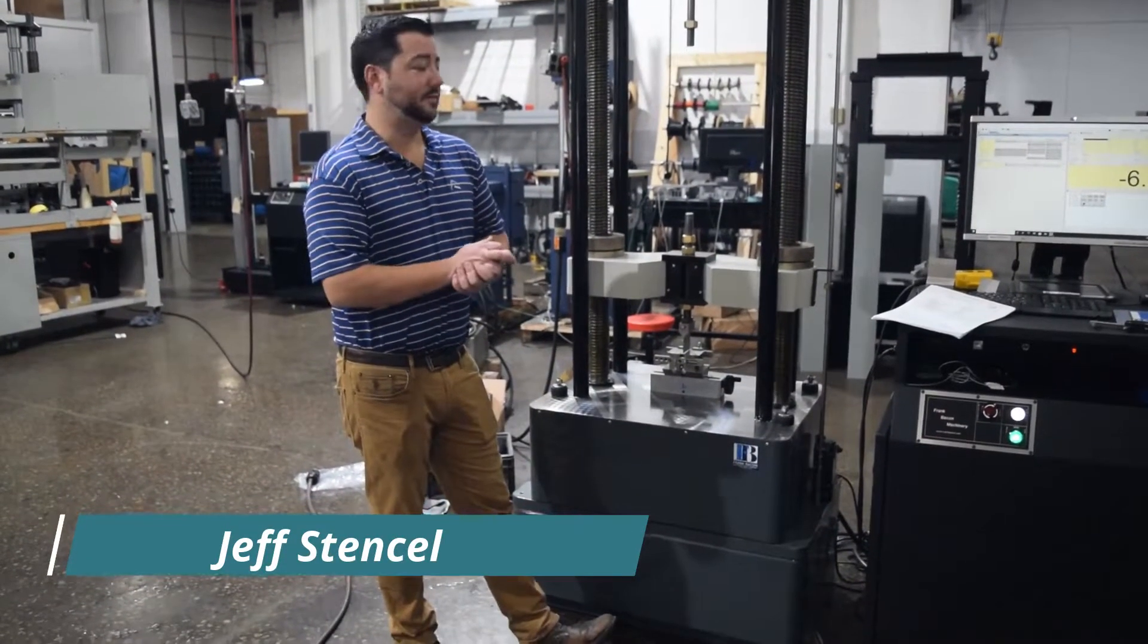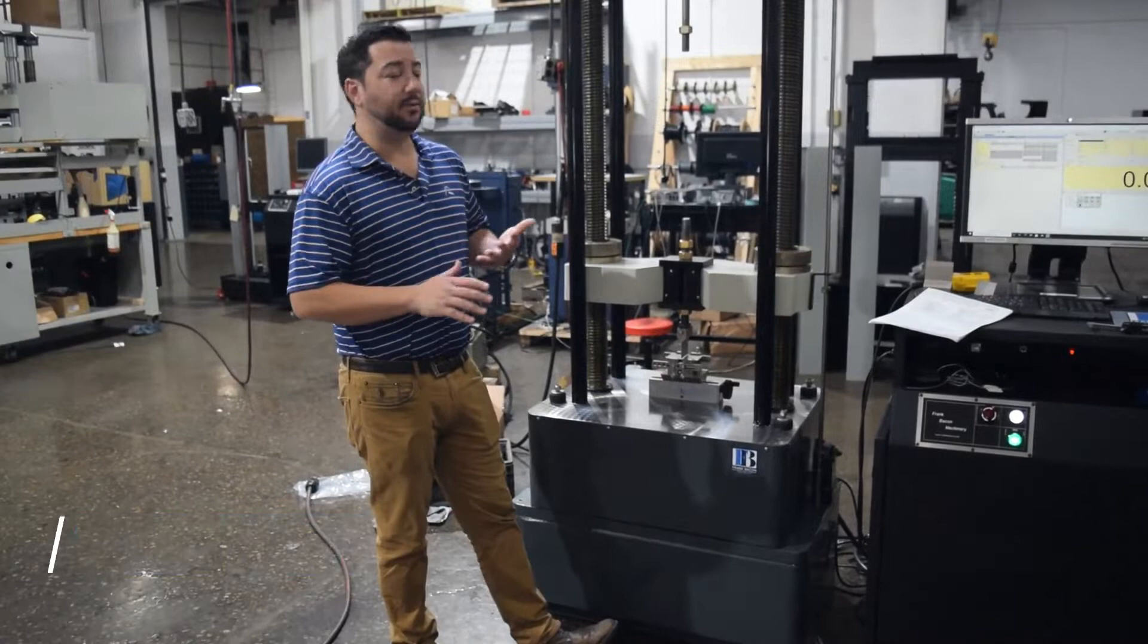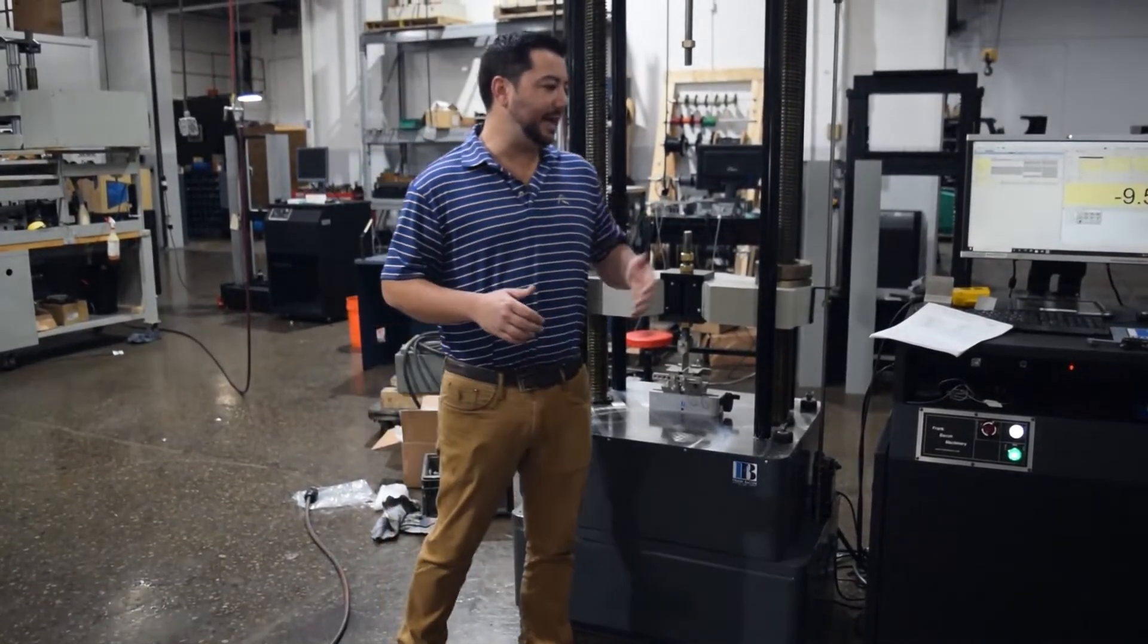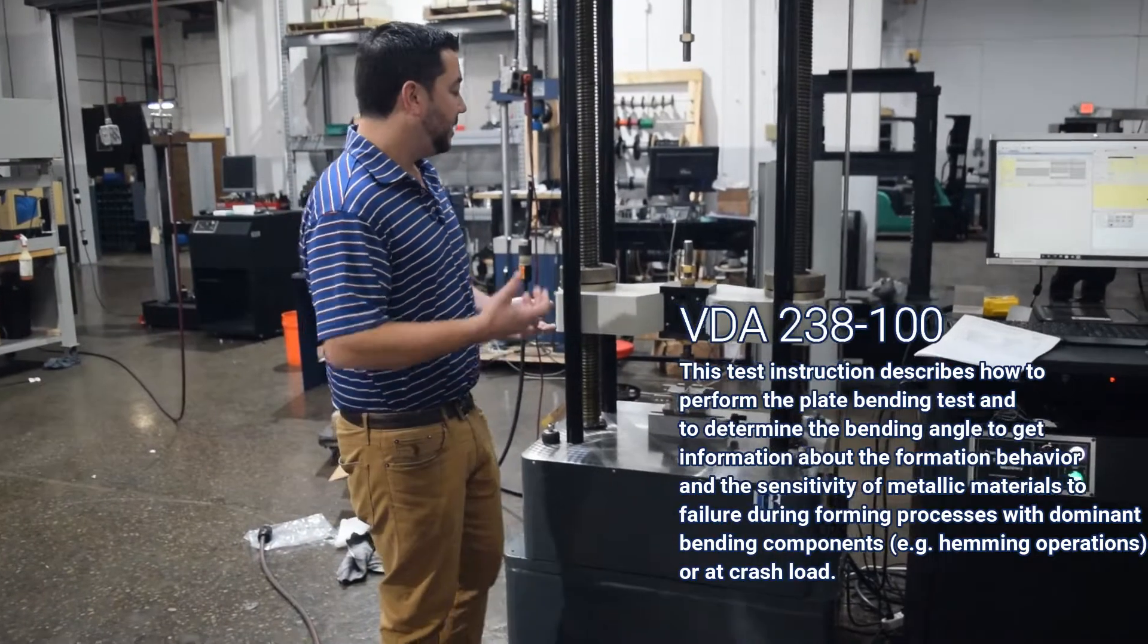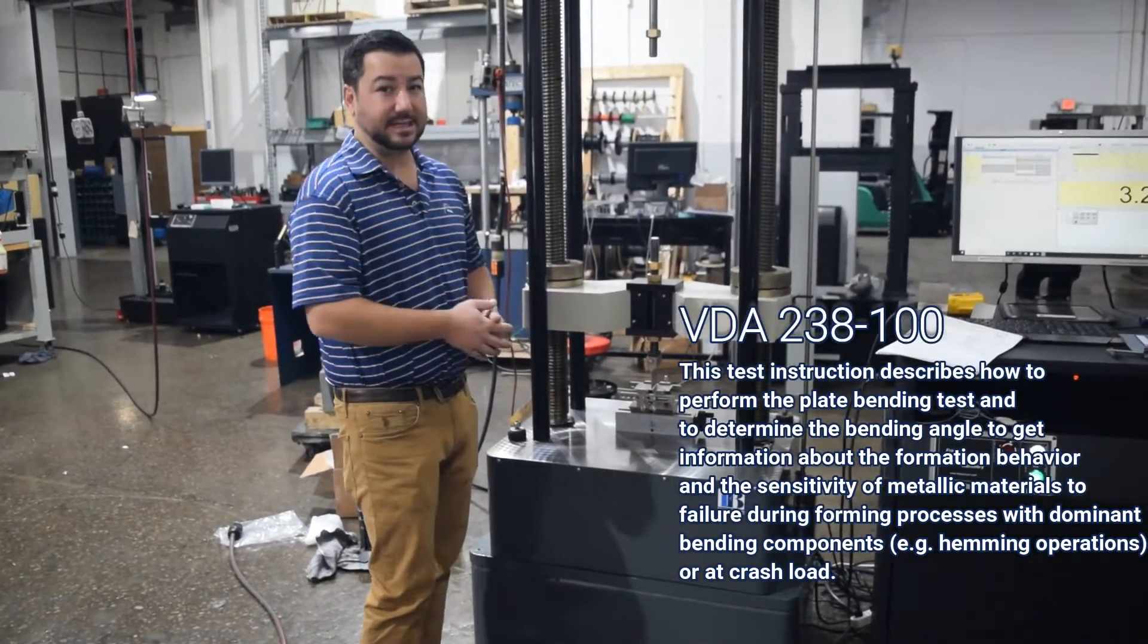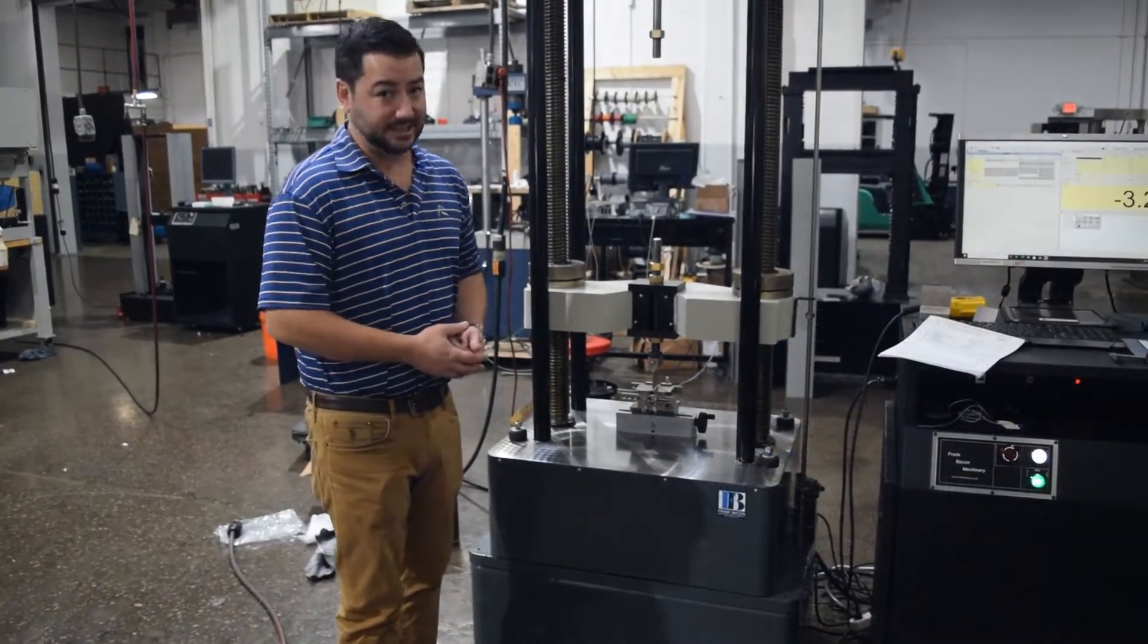Hey there, my name is Jeff Stenzel here with Frank Bacon Machinery. Today we're going over the VDA 238-100 Tesco, which is a sheet metal bend test commonly applied to automotive testing.